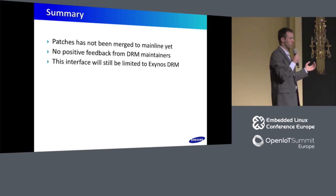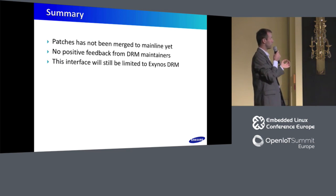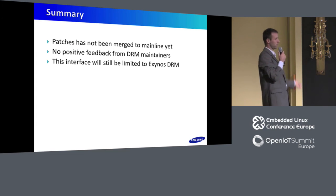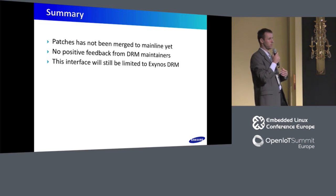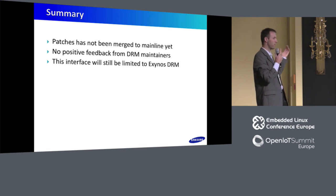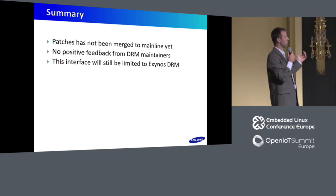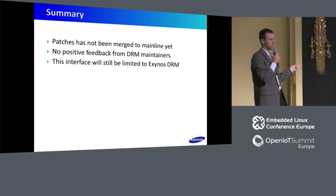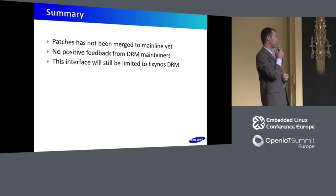As a conclusion, the patches have not been merged to mainline yet, so this whole presentation was about a proposal not yet in mainline. We received no positive feedback from DRM maintainers. From their perspective, the main disadvantage is that we introduced new generic IOCTLs that must be supported forever, and they think there is no need for such a thing in the mainline DRM subsystem. We would like to continue work on this API change, though it will probably be limited to the Exynos DRM subsystem.